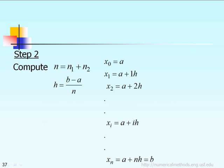Step 2: After inputting everything in Step 1, we calculate the total number of segments n, which equals n1 plus n2. Then we calculate the step size h, and after that we calculate the values x₀, x₁, x₂, up to the last one, xₙ.